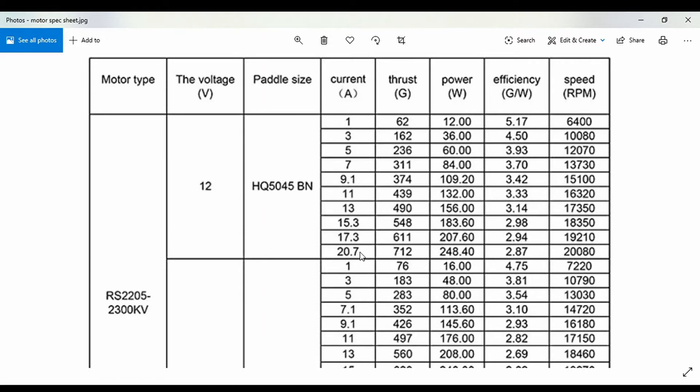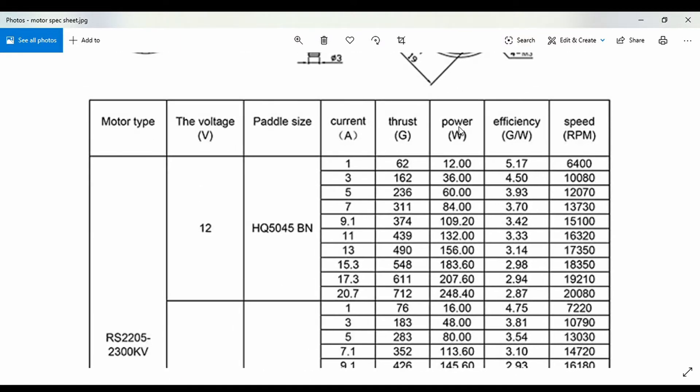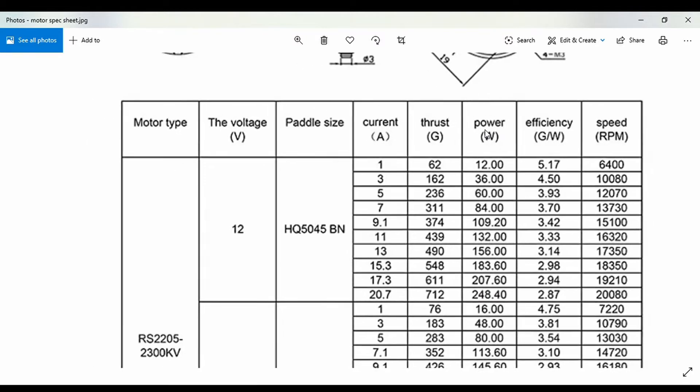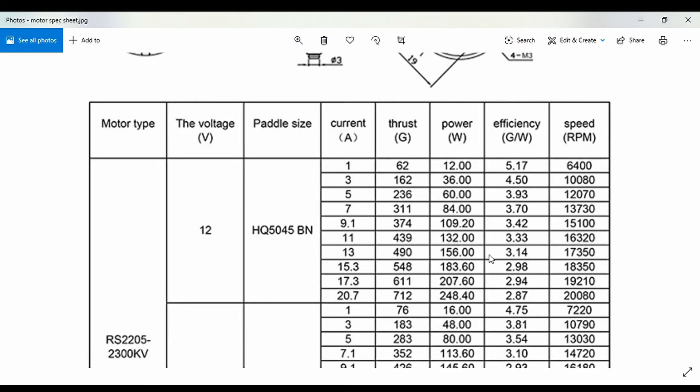Since on a quadcopter there will be four motors, all four will be drawing 20.7 amps at max throttle. Next, the thrust: at 1 amp, the motor generates 62 grams of thrust. At 3 amps, 162 grams. At max, 712 grams. For four motors, 700 multiplied by four is 2848, which is almost 3 kg of thrust. Efficiency and power are not required for selecting parts unless you want to increase efficiency. Speed can also be ignored.